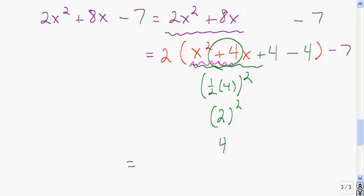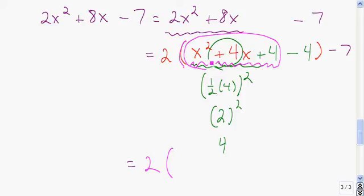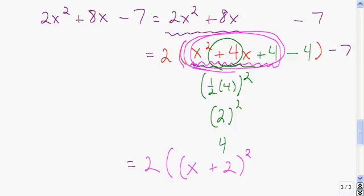Inside the parentheses, worry about these three terms and factor them. Taking half of this number, squaring it, and adding it created the perfect square trinomial. We have the 2 on the outside, and factoring the trinomial gives another parenthesis: x plus 2, quantity squared. That piece matches up, and we still have the minus 4 inside the overall parentheses, giving minus 4, then the minus 7 outside.